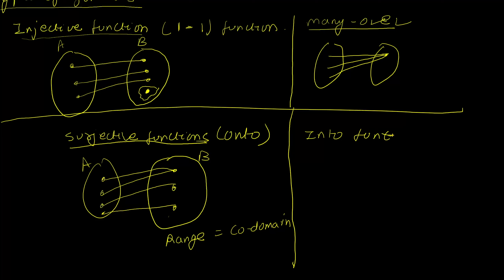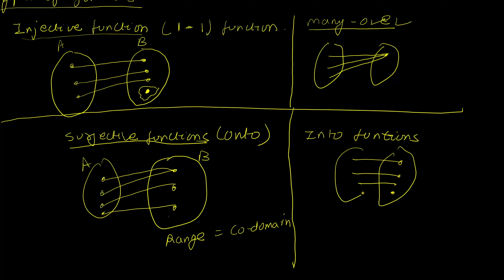The polar opposite of surjective functions are into functions. These don't have a specific name either, but they are functions that have at least one output that doesn't map to any input. There could be a many-to-one relationship among the mapped elements, but at least one output must not map to any given input.